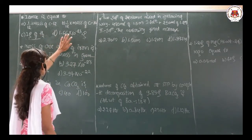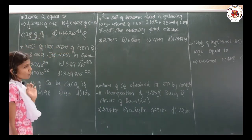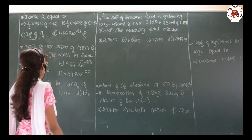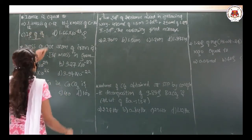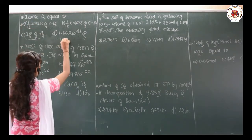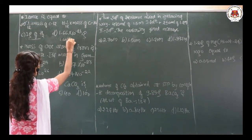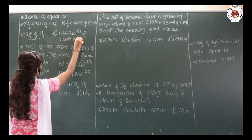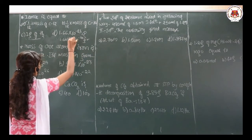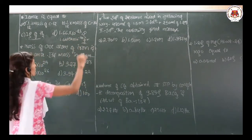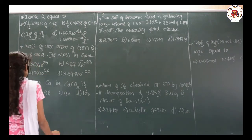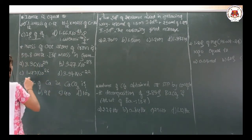Since those three options are not correct, the first option is correct: 1 amu equals 1/12th mass of the carbon-12 isotope. If it were 1.6605 × 10⁻²⁴, that would be the value of 1 amu, but since they have given 10⁻²³, we eliminate that option. So let me explain the second question.